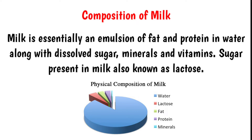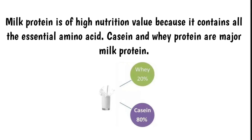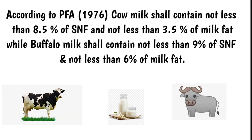Milk protein is of high nutritional value because it contains all the essential amino acids. Casein and whey protein are the major milk proteins. Casein is present at around 80% while whey is present at around 20%.